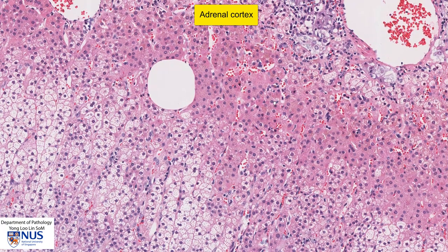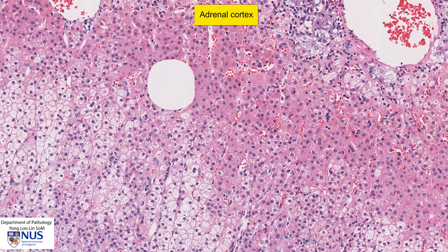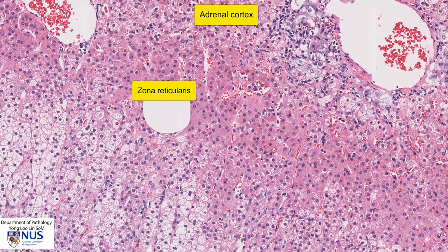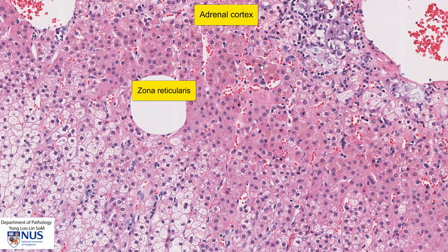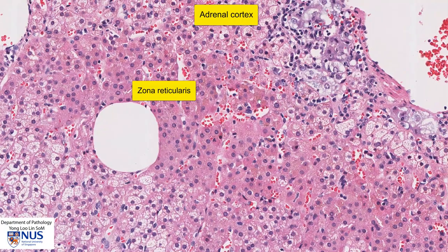Moving on to the innermost layer of the adrenal cortex, this is the zona reticularis, and these cells elaborate androgens. They usually have a more pinkish, or sometimes a brownish cytoplasm, because of the presence of lipofuscin pigment.